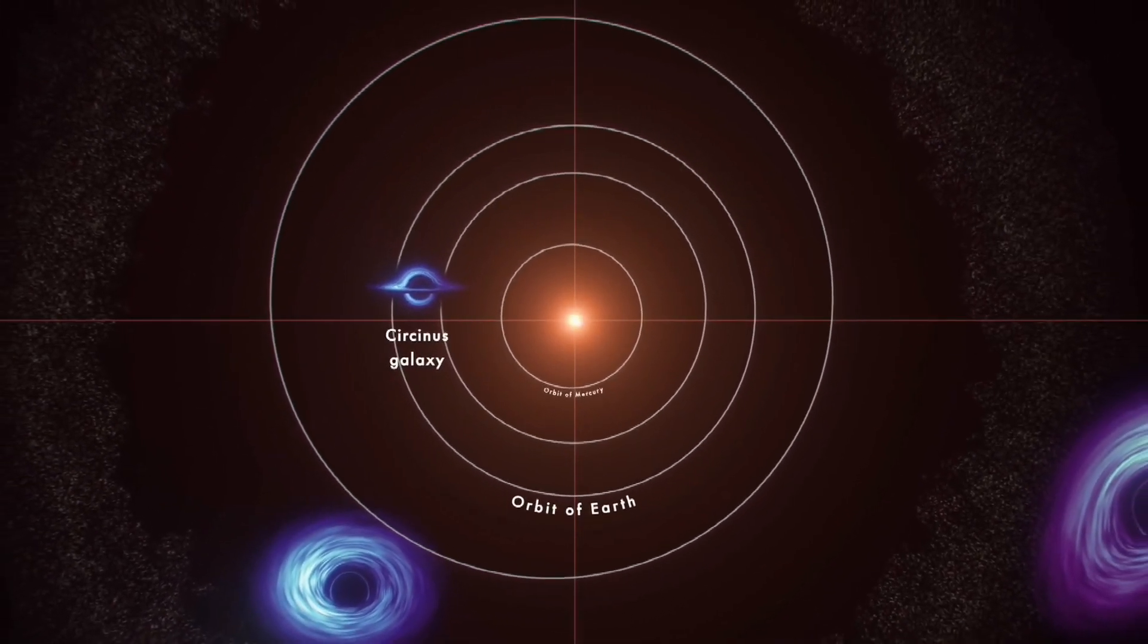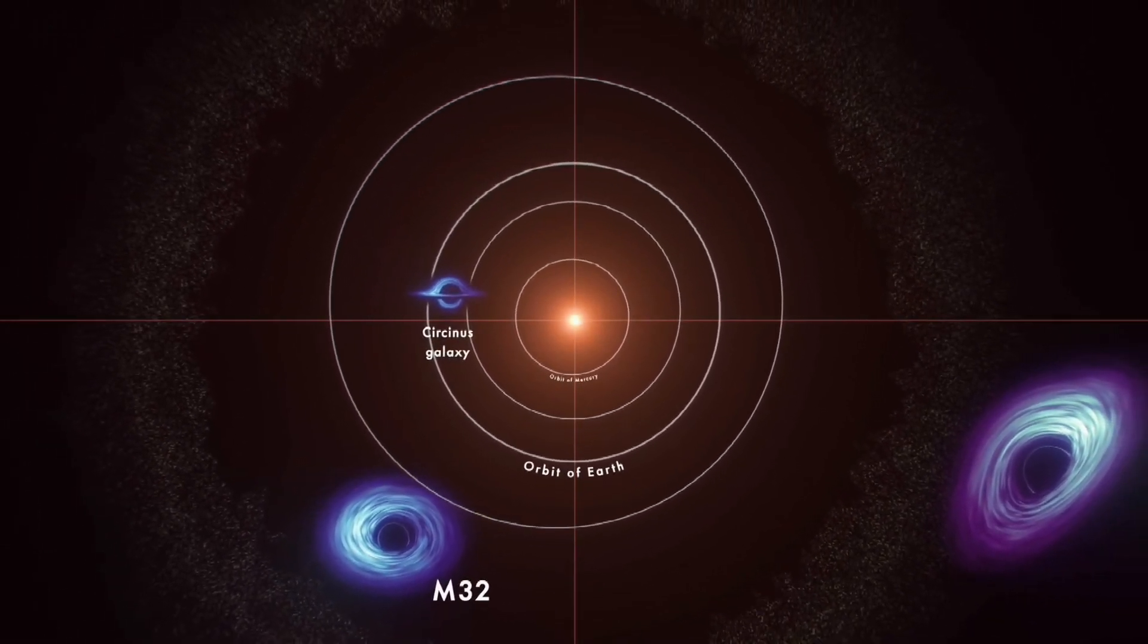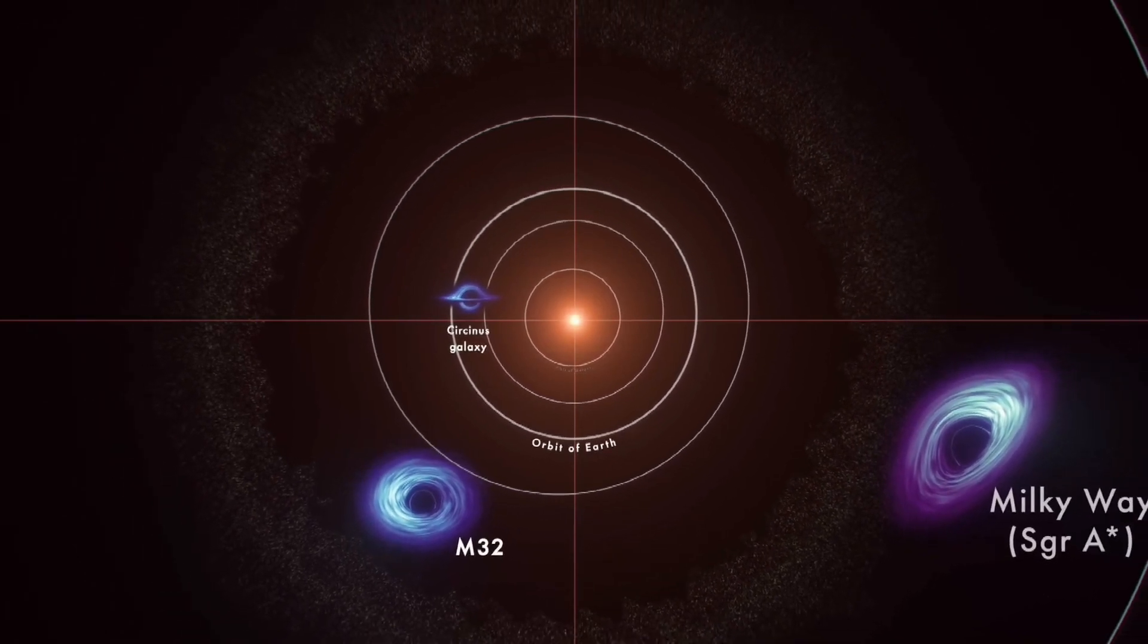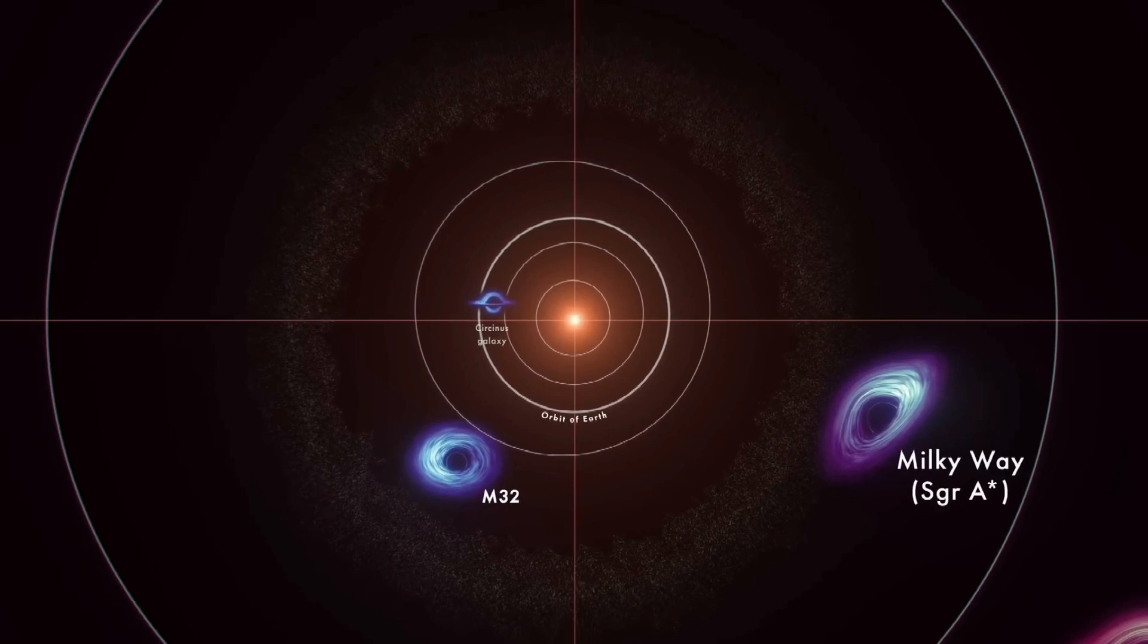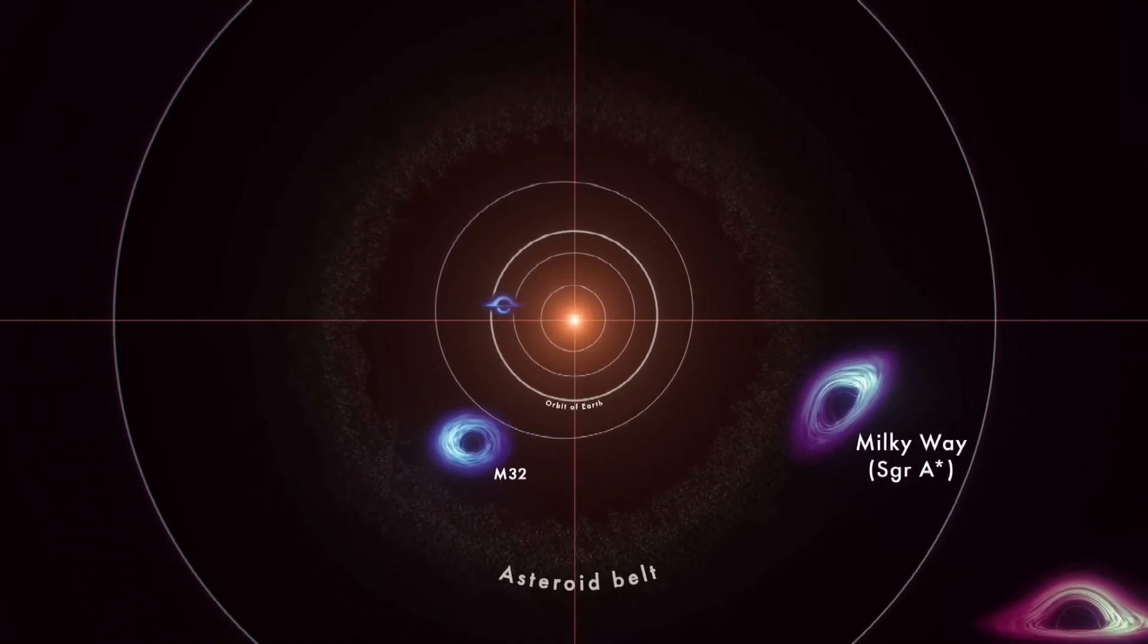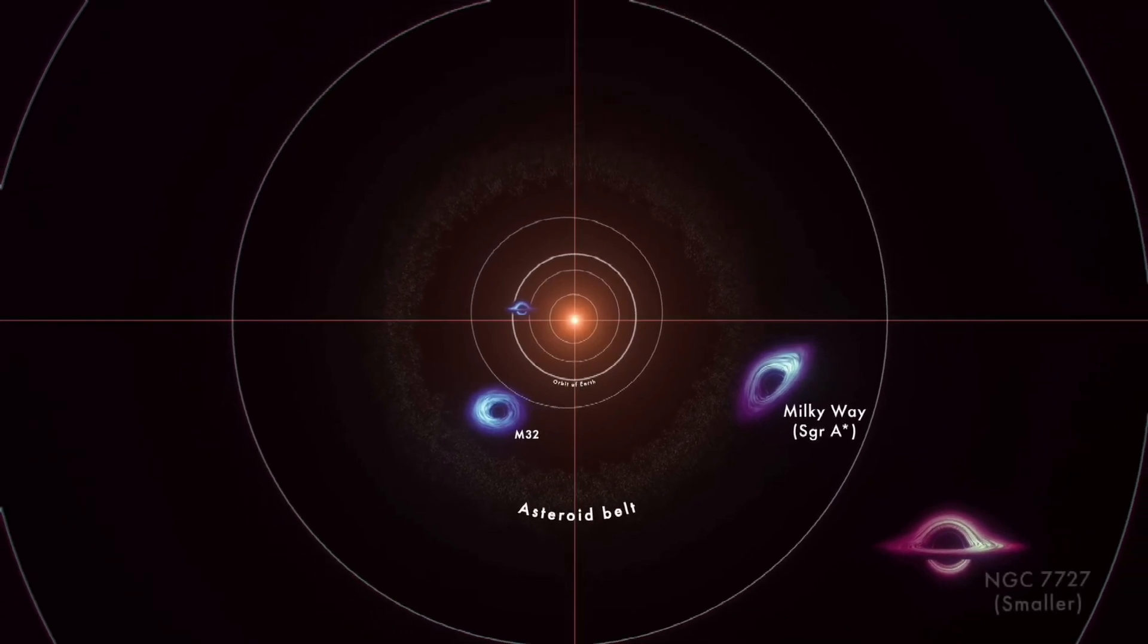Next, the focus shifts to the black hole at the center of our Milky Way, referred to as Sagittarius A star. By monitoring the movements of stars orbiting it over an extended period, scientists have estimated its mass to be 4.3 million suns. Its shadow diameter is roughly half the size of Mercury's orbit.